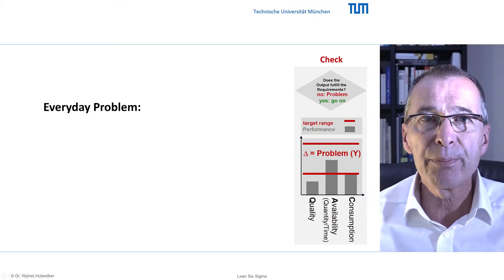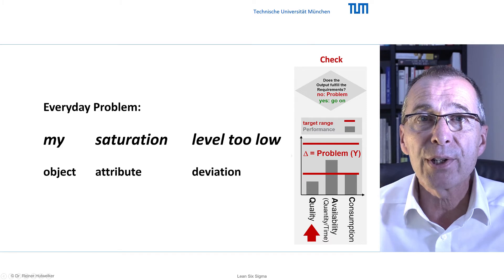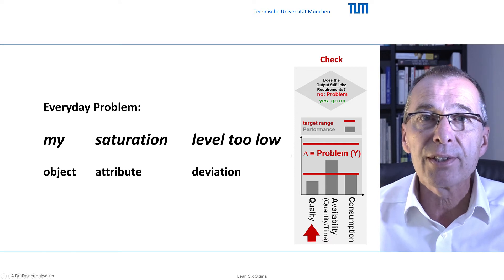When I am hungry, then this is a problem from the perspective of Six Sigma. My saturation level is too low. But of course I would not collect data or conduct a workshop on this routine problem. Because the solution is obvious. Eat!